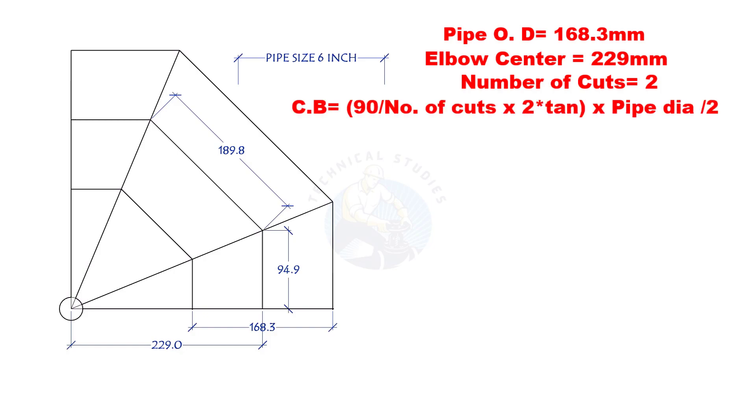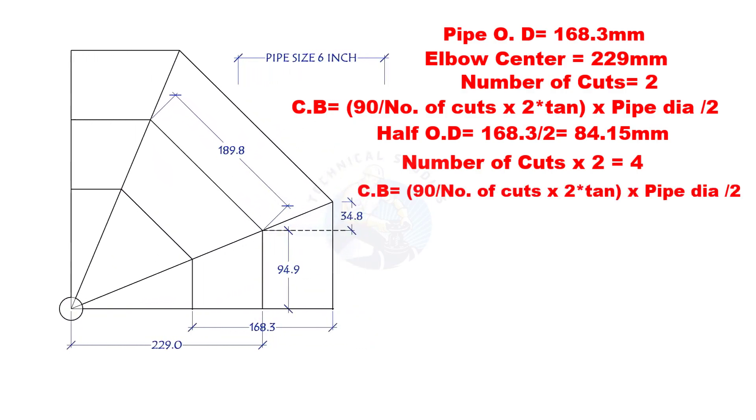Cutback is 90-degree divided by number of cuts into 2 multiplied by the half OD of the pipe. Half OD of the pipe is 84.15 mm. Number of cuts into 2 equals 4. Let us apply the formula.